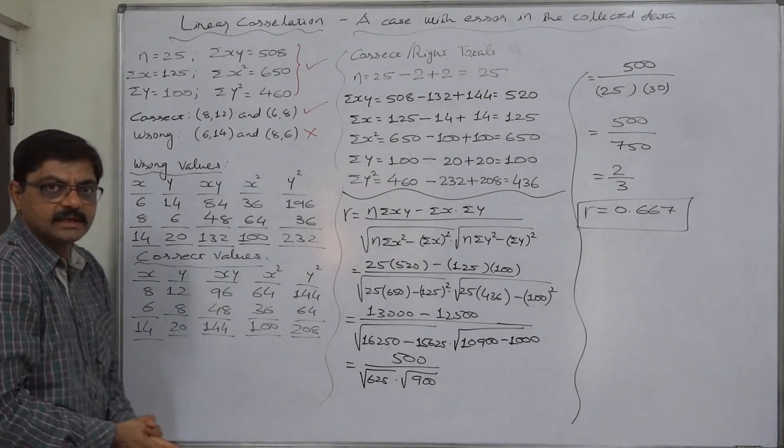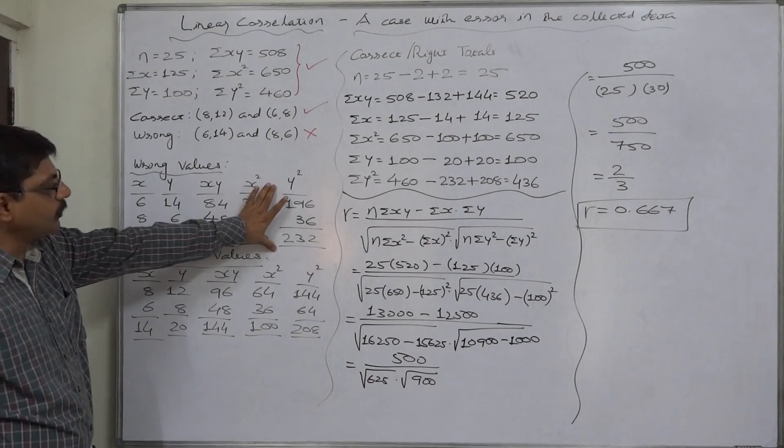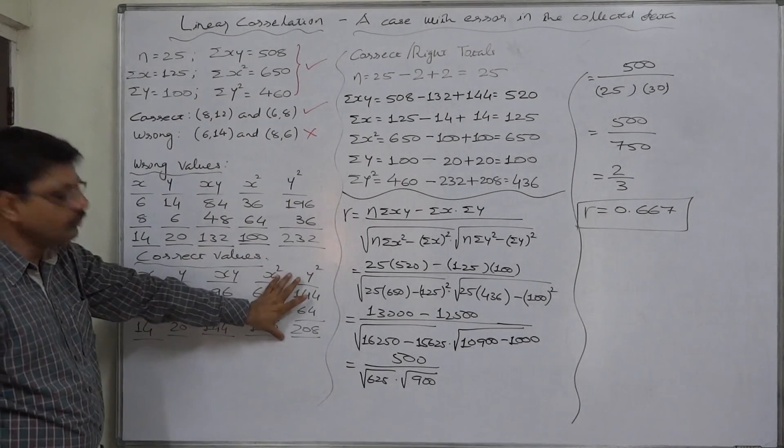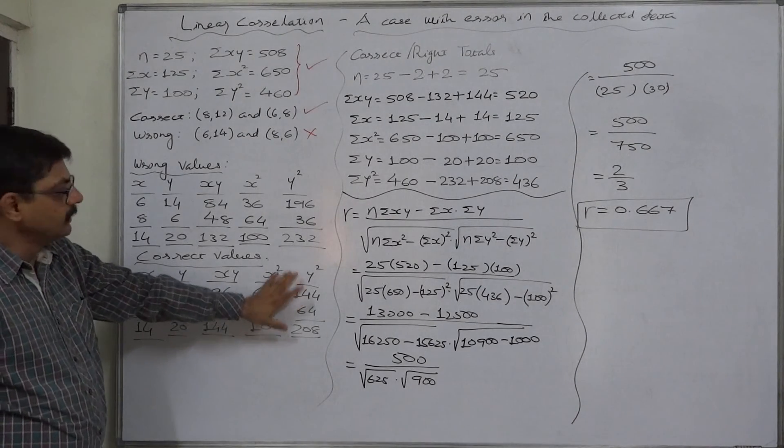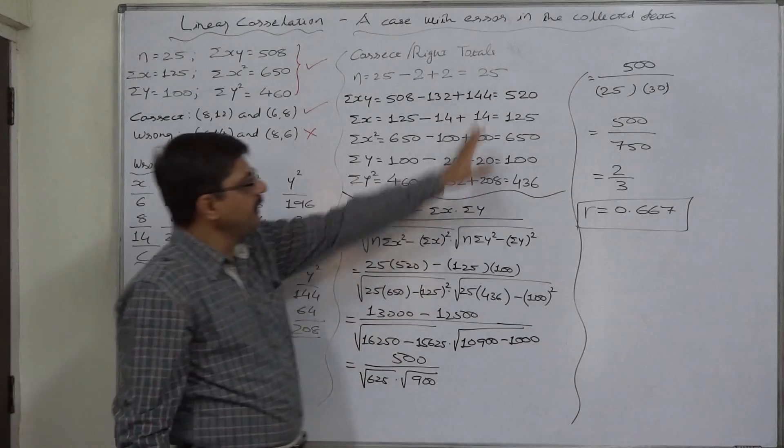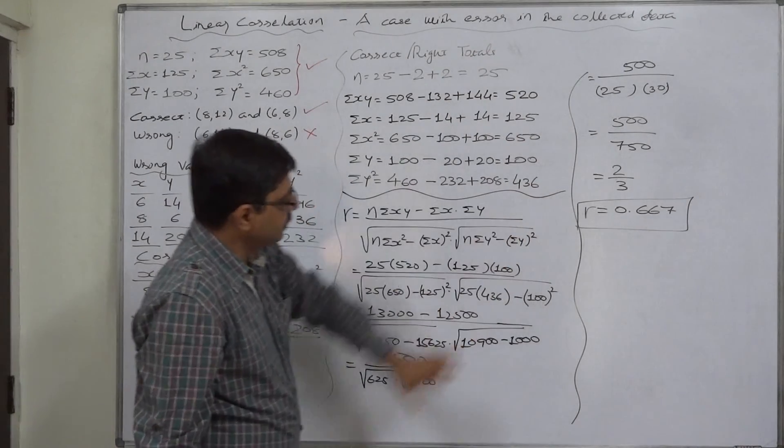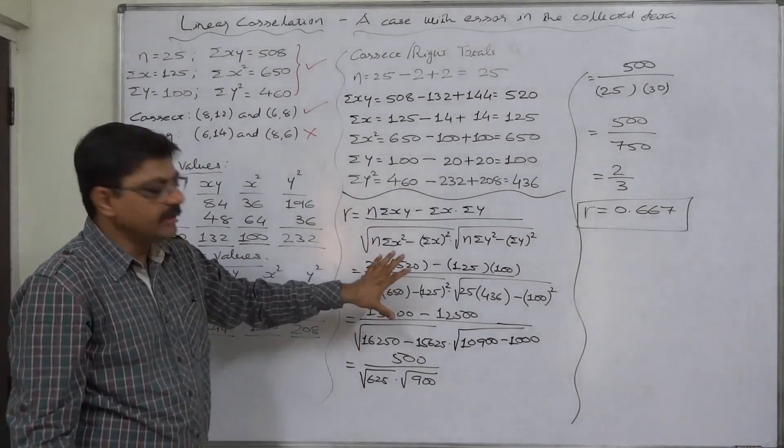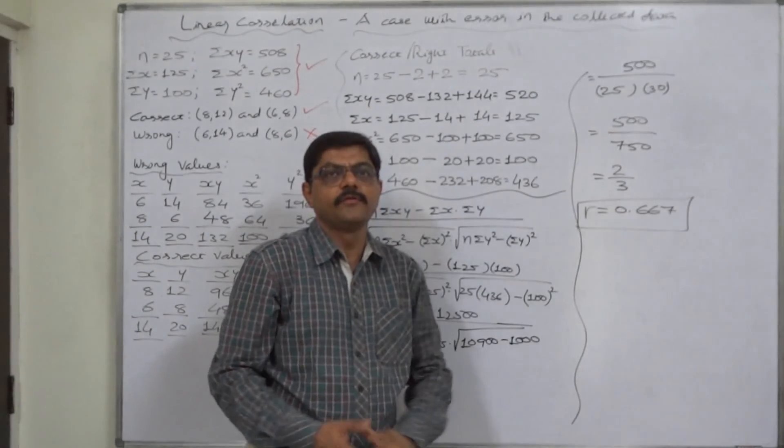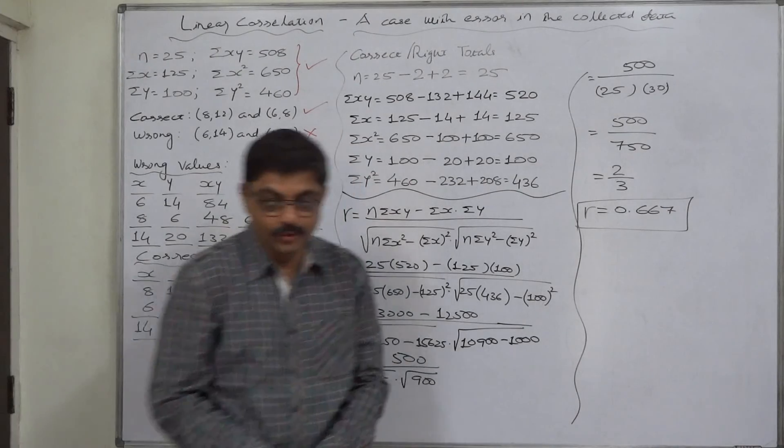This is the correct value of coefficient of correlation. So the theory is we have to remove the effect of wrong values from the given summations and we have to add the effect of correct values to the previously given summations. The result will be right or correct summations. Substitute them into the formula and we will get the correct value of coefficient of correlation. Thank you very much.